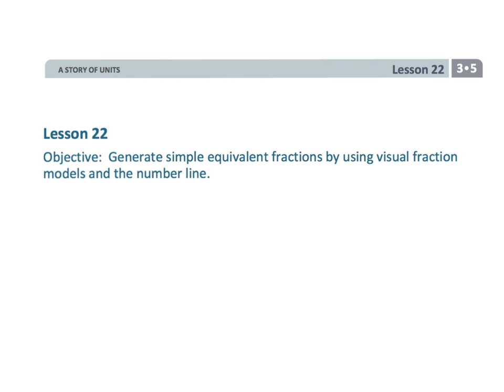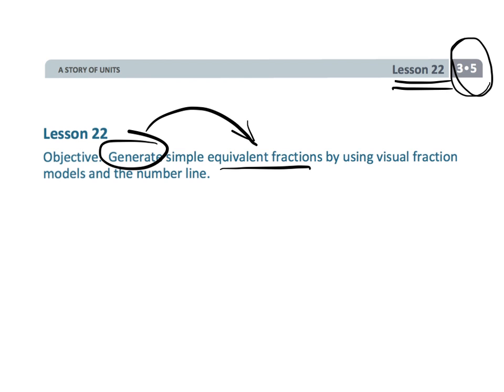This is third grade, module 5, lesson 22, and students are going to start to generate some simple equivalent fractions using that visual fractions model on the number line.